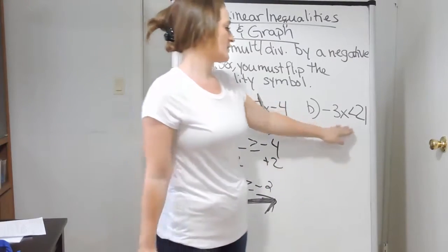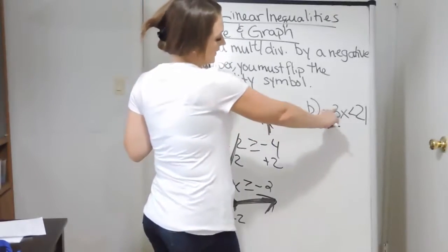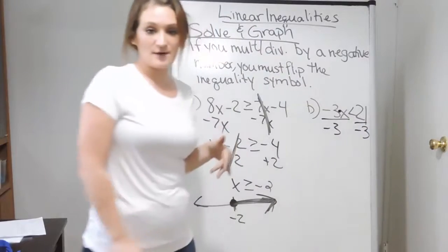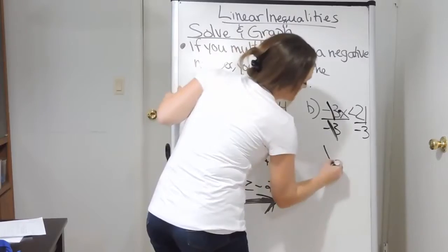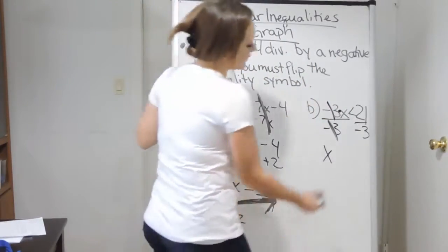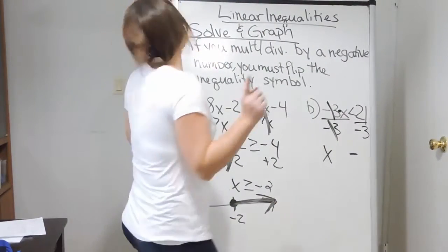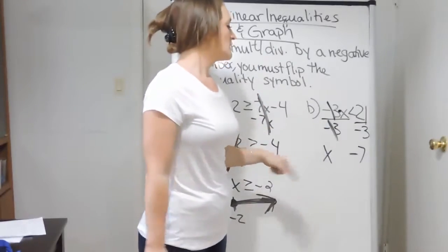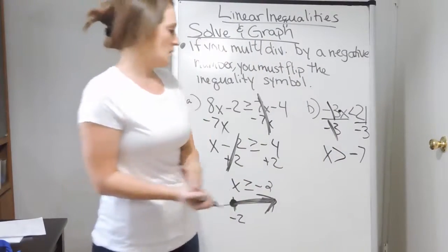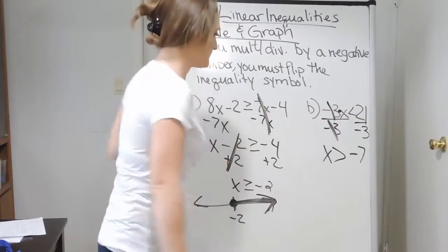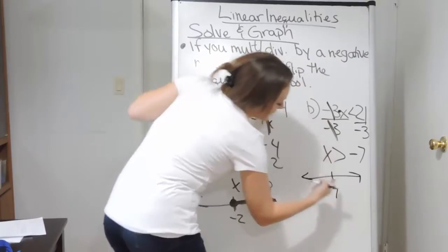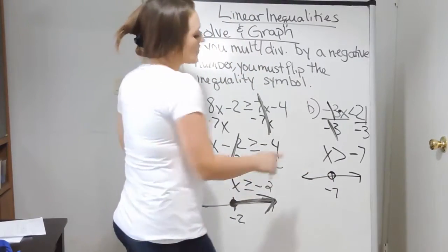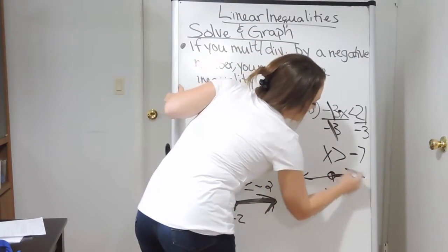This next one is a one-step problem: negative 3x is less than 21. Negative 3x is the same as negative 3 times x, so we do the opposite and divide both sides by negative three. On the left, negative three divided by negative three cancels, leaving x. On the right, 21 divided by negative three — different signs, so it's negative — gives negative seven. Also, since we divided by a negative, we must flip the symbol: this is no longer less than but greater than. Our solution is x is greater than negative seven. For the graph, I plot negative seven, use an open dot since it's a strict greater than, and shade everything to the right of negative seven.